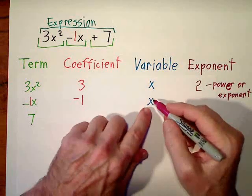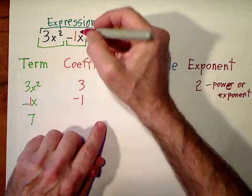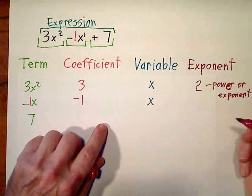And on the variable, let's look at it up here. The exponent is understood to be a 1.